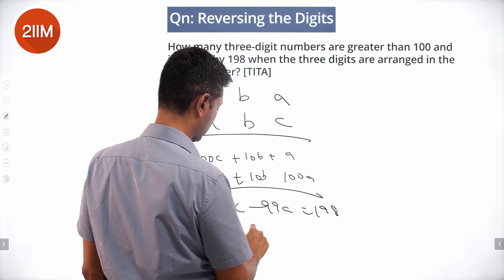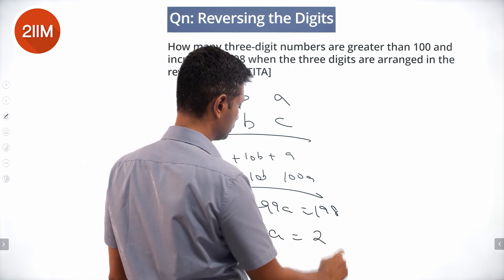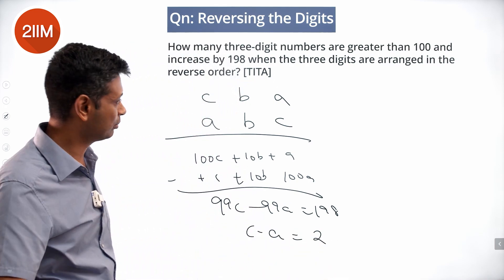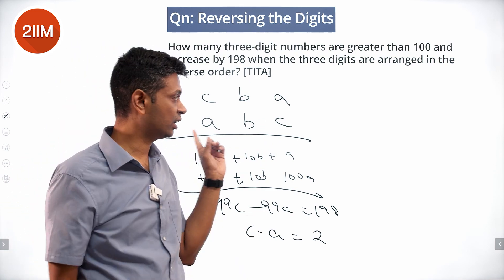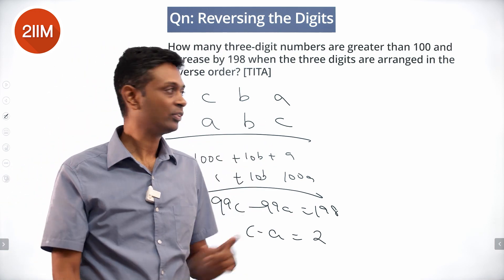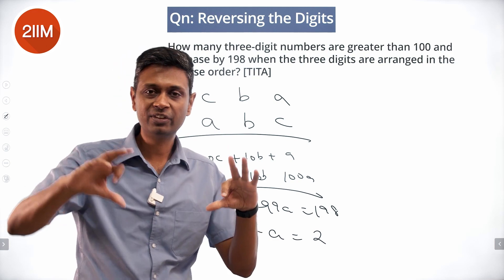We have a three-digit number where the units place is two more than the hundreds place. When we flip it, the difference becomes 198.